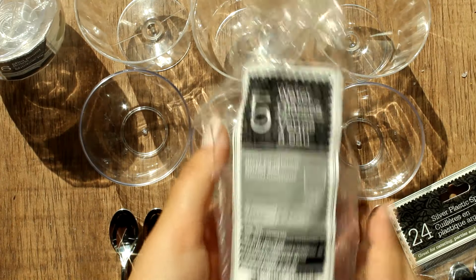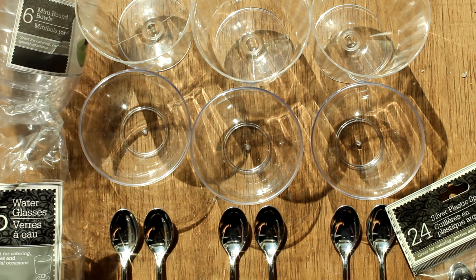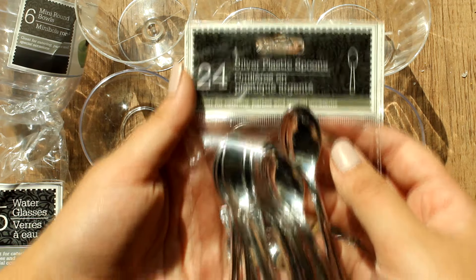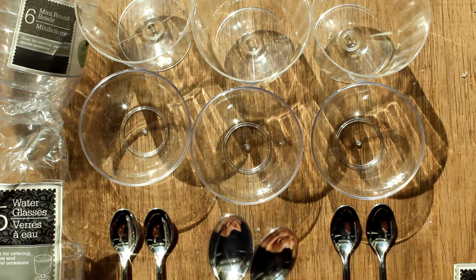To make the cotton ball and q-tip caddy, I first made the canisters by using these acrylic water glasses, mini round bowls, and mini silver spoons from the party section of the Dollar Tree. The mini round bowls fit perfectly over the glasses to make a cute canister and the two spoon tops glued together make beautiful handles for the tops.